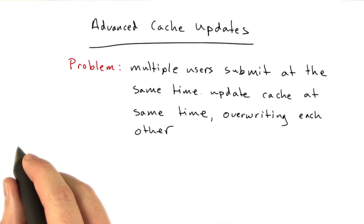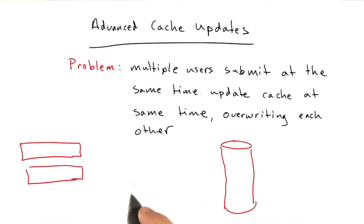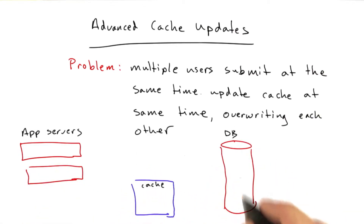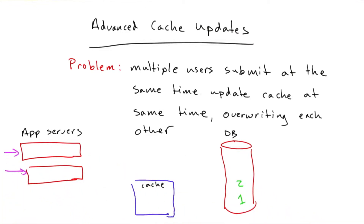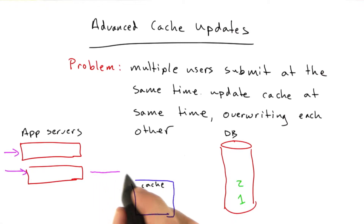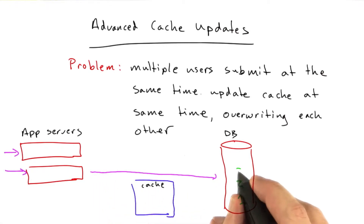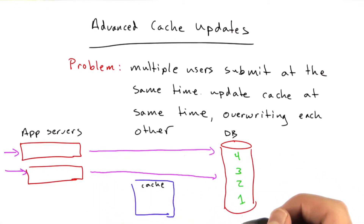Here's an example of the problem. Say we've got two app servers, and we've got our database and our cache. Say we've got elements in our database — we're going to call them 1 and 2. These app servers are both going to get requests from the user to submit a new entry into our database, a new piece of art for ASCII Chan. This happens at the same time, so this server may submit element 3 and this one may submit element 4.